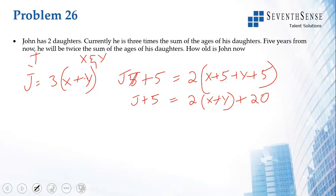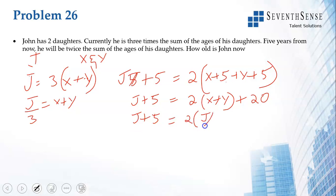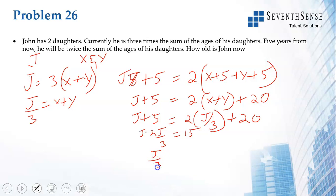Now we substitute x + y as j/3. We get j + 5 = 2(j/3) + 20. Taking terms to the appropriate side: j − 2j/3 = 15, which gives j/3 = 15, so j = 45.